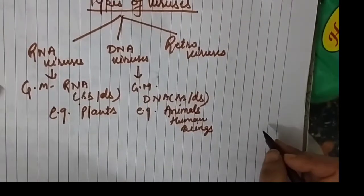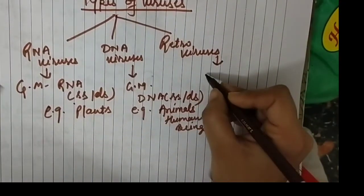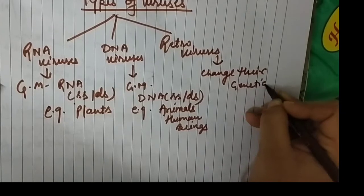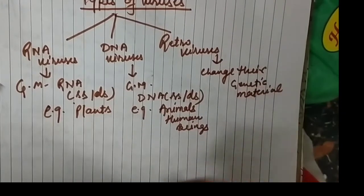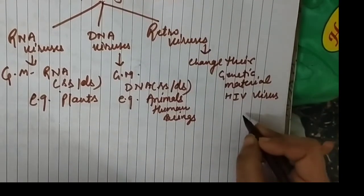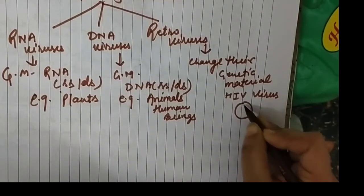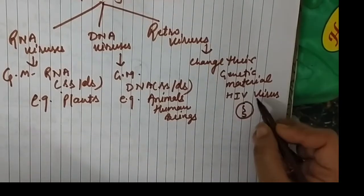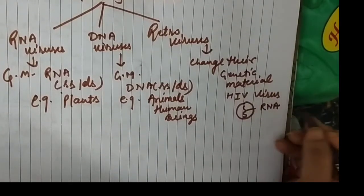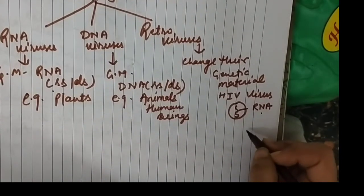The last category is retroviruses — a specific category. These are viruses which can change their genetic material. A very good example is HIV virus, Human Immunodeficiency Virus, which causes AIDS in our body. This virus has a genetic material of RNA. Now, our genetic material is DNA, but HIV has RNA as its genetic material. So when it enters our body, the question arises: how can it join with our DNA if it is RNA?